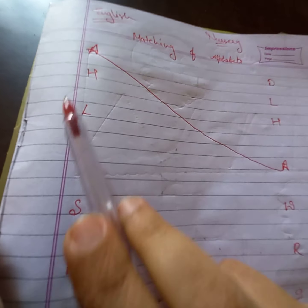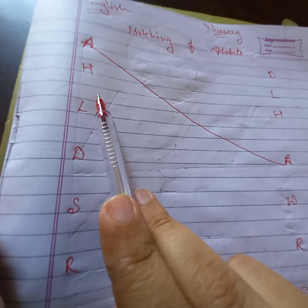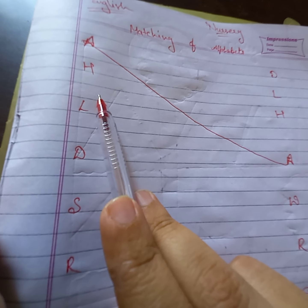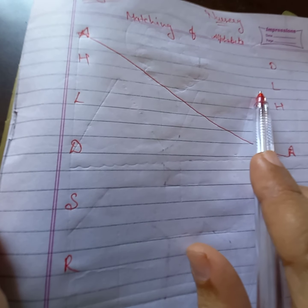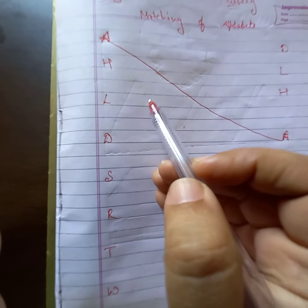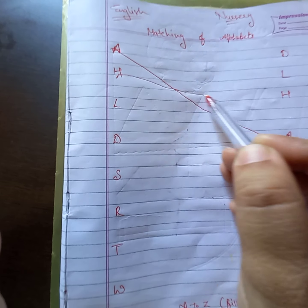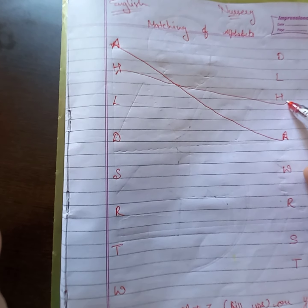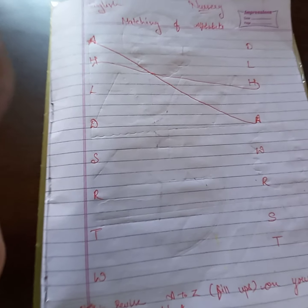Next is H — H for hen. Inside the assignment ka hai? Ye raha, H, thik hai? Yaha se yaha tak — H for hen.